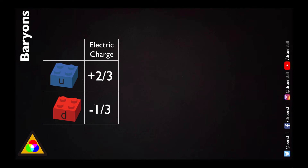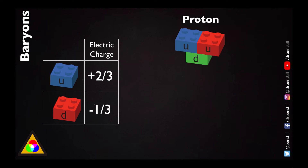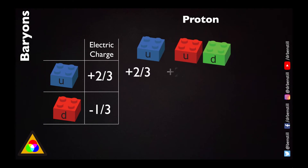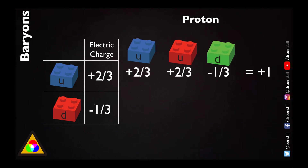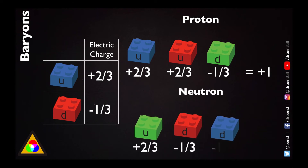Just to remind you, the charge on the up quark is plus two-thirds of the electronic charge, whilst the down quark has minus one-third. For the proton — made of two ups and one down — summing the charges gives plus two-thirds plus two-thirds minus one-third, which equals plus one, as expected. For the neutron: plus two-thirds minus one-third minus one-third equals zero, as expected, because the neutron has neutral charge.